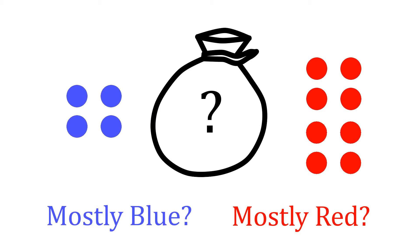At this point, it's equally likely that I brought either bag. Now, suppose I reach in and draw out a single marble. It's red. I put it back in, shake the bag, and draw out another marble. It's blue. I keep doing this until I've done this a total of 12 times. Overall, I drew out a red marble eight times and a blue marble four times. What is the probability that the bag I have with me is the mostly red bag?